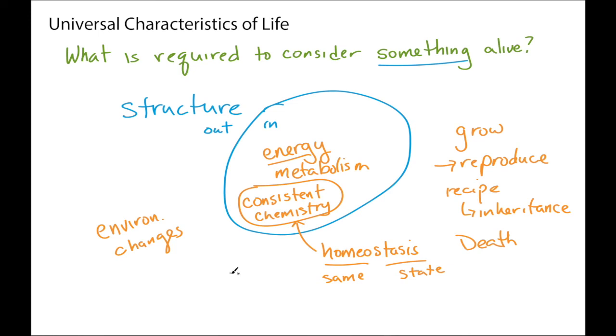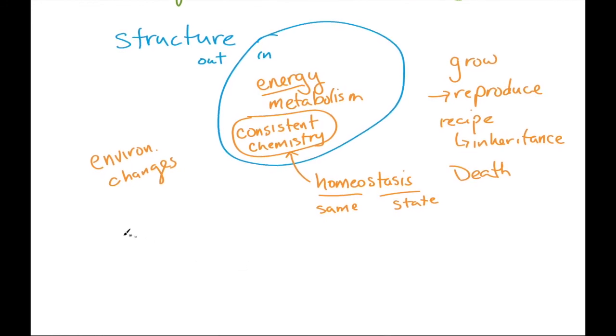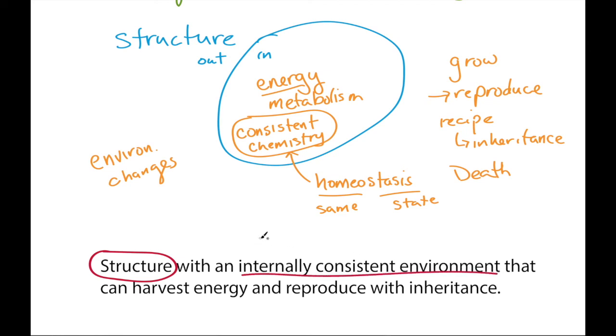So we can take these ideas and make it more of a list of things that are needed. So we can annotate this with the words people normally use. Structure is one of the key aspects. The internally consistent environment is this homeostasis. That harvesting of energy is metabolism.